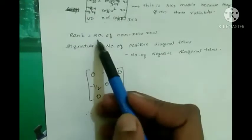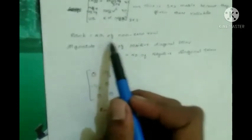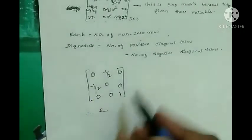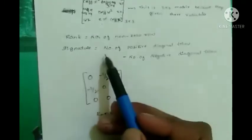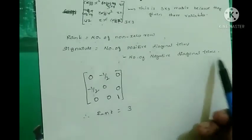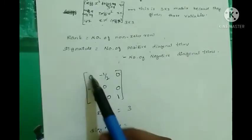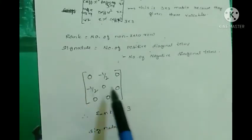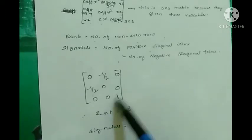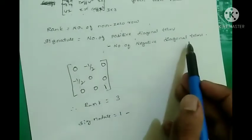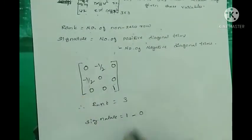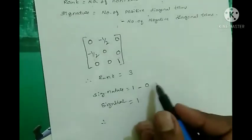The rank is equal to the number of non-zero rows. There are 3 non-zero rows, so rank equals 3. The signature is equal to the number of positive diagonal terms minus the number of negative diagonal terms. There is only one positive diagonal term, which is 1, and no negative diagonal terms, so signature equals 1 minus 0, which is 1. Therefore rank and signature is (3, 1).